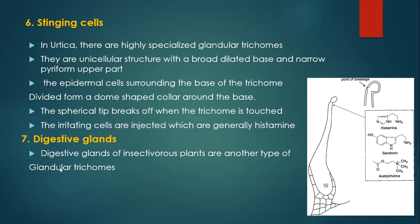Digestive glands of insectivorous plants are another type of glandular trichome. Such glands are present in insectivorous plants like pitcher plants. When insects come to access the glucose or other substances produced within the pitcher plant, they are captured by these glands. Inside the pitcher plant, such glands digest all of the body parts of the insects.